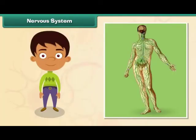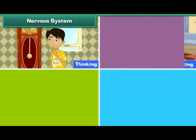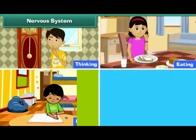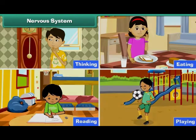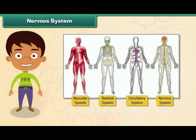Nervous system. The human nervous system consists of the brain and nerves. It controls all physical and mental human activities such as thinking, eating, reading and playing. All the other organ systems and their functions are controlled by the nervous system.